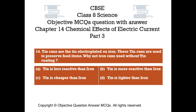Question number 14. Tin cans are tin electroplated on iron. These tin cans are used to preserve food items. Why are iron cans not used without tin coating? Option A: Tin is less reactive than iron. Option B: Tin is more reactive than iron. Option C: Tin is cheaper than iron. Option D: Tin is lighter than iron.